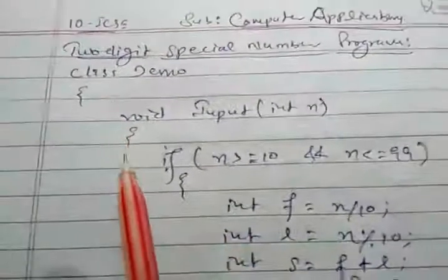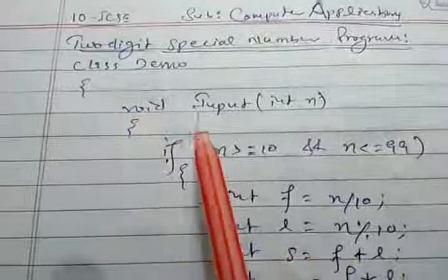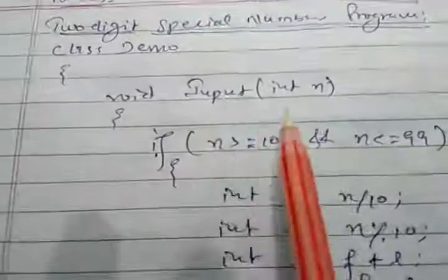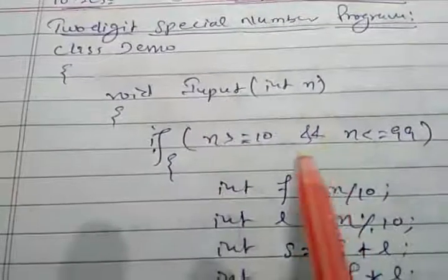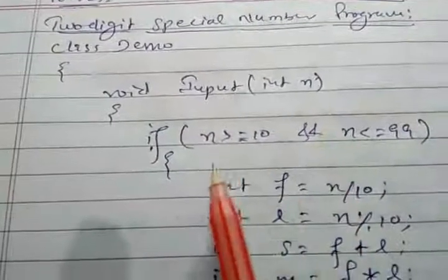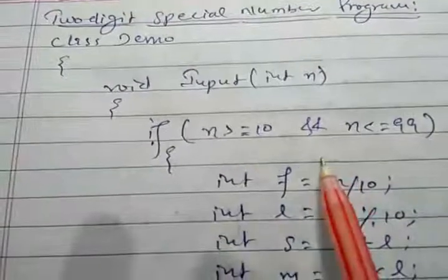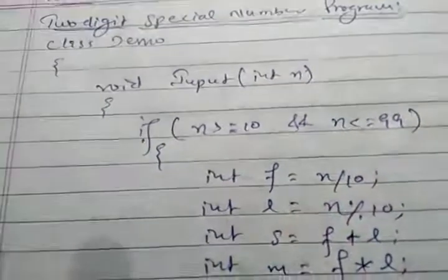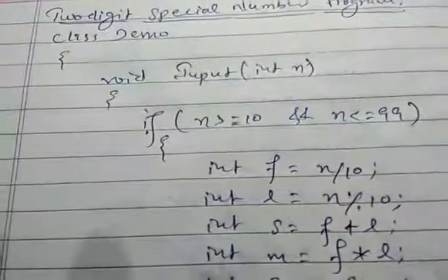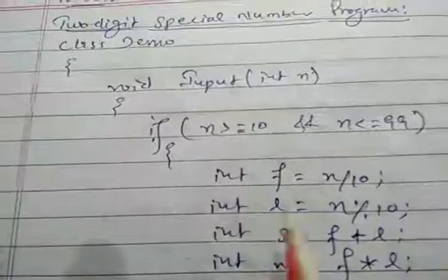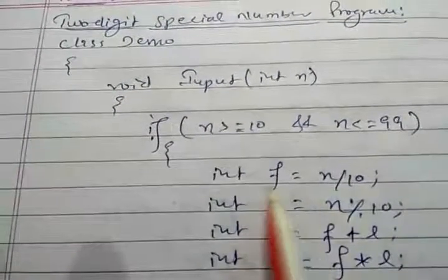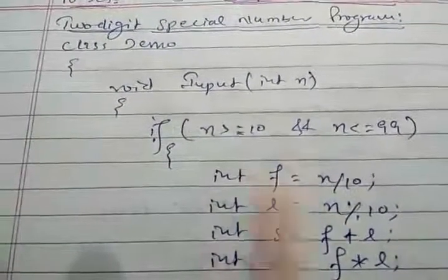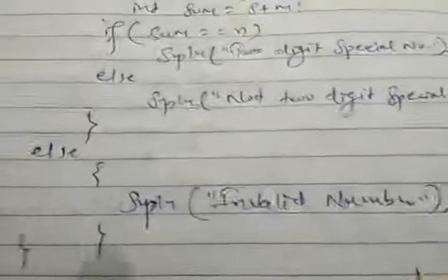This is the solution. In class Demo, void input, we are inputting a number in n. If n is greater than or equal to 10 and n is less than or equal to 99, this is the condition for checking whether the number is a two-digit number or not. If it is two digits we perform calculations, otherwise we print the else portion: invalid number.